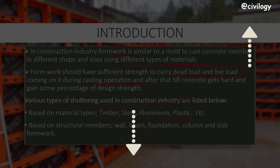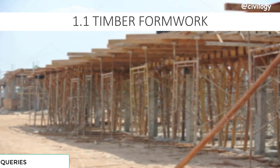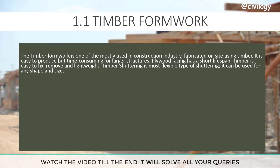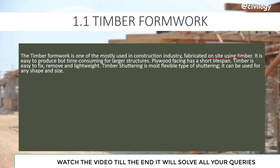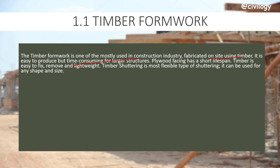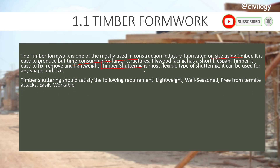Timber formwork is one of the most commonly used in the construction industry because it can be fabricated on site and is easy to produce, but it is time-consuming for large structures. Plywood facing has a short lifespan. Timber is easy to fix, remove, and is lightweight. Timber shuttering is the most flexible type and can be used for any shape and size.